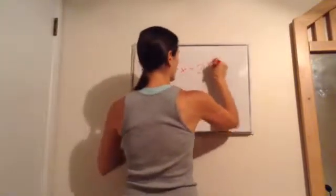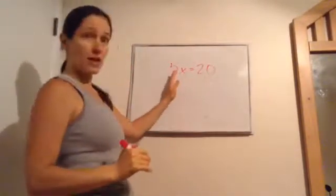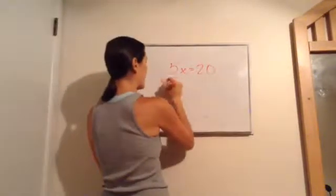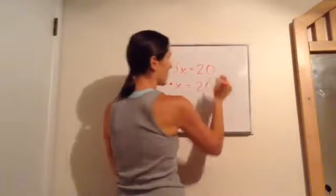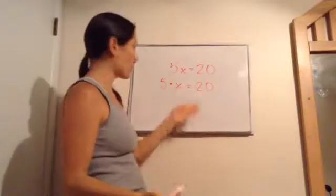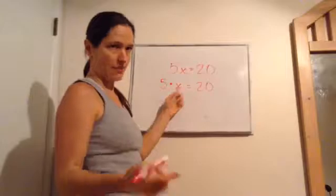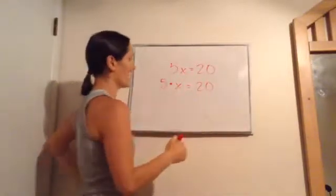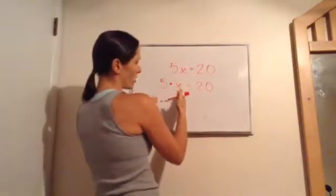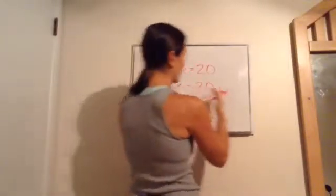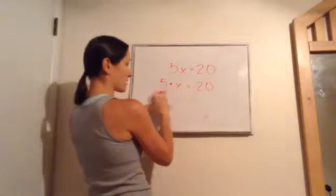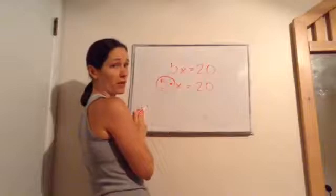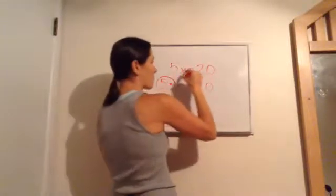5x equals 20. Now, when a number is next to a letter, what does it mean? So I could actually say 5 times x equals 20. Now, if you know anything about math, you know this answer is 4, okay? But let's say you didn't because you need to know how to work these problems even when they get harder. You want your x's on one side, your numbers on the other. And right now my x is on the left side, but I have a number over here. And I have times 5 over here.